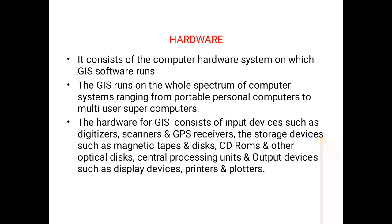Coming to hardware, it consists of the computer hardware system on which the GIS software runs. GIS software runs on a whole spectrum of computer systems, from portable personal computers to multi-user supercomputers. The hardware for GIS consists of input devices such as digitizers, scanners, and GPS receivers; storage devices such as magnetic tapes, discs, CD-ROMs, and other optical discs; central processing units; and output devices such as display devices, printers, and plotters.